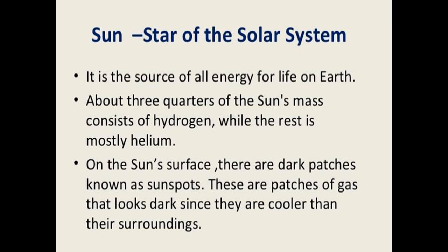The sun is the source of all energy of life on Earth. The energy received from the sun is called solar energy, and the Earth receives almost all of its energy from the sun in the form of heat and light. The sun is essential for the growth and maintenance of all forms of life on Earth, and all living beings, whether plants or animals, depend on the sun for their food. About three quarters of the sun's mass consists of hydrogen, while the rest is mostly helium. On the sun's surface, there are dark patches known as sunspots, which are patches of gas that look dark since they are cooler than their surroundings.